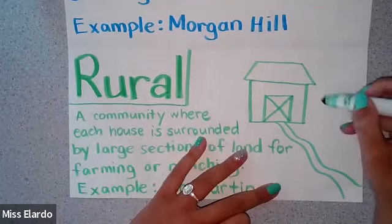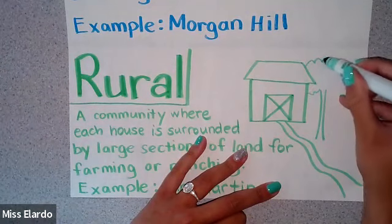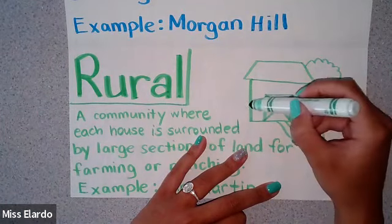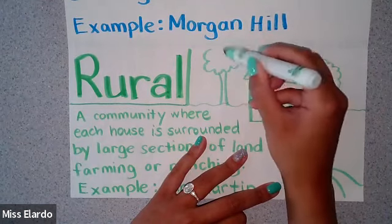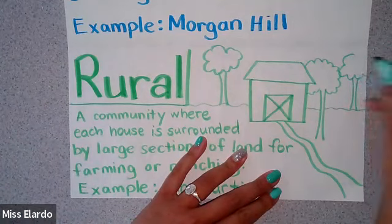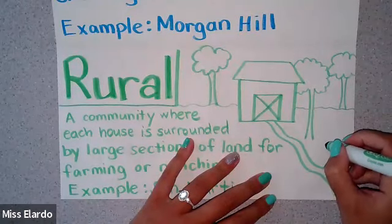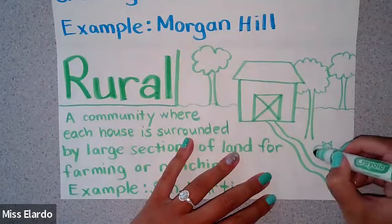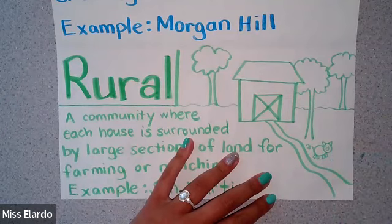I'm going to draw some trees — this tree is going behind the barn. I'm going to add animals. I want one more tree right here in the background. Now I'm going to draw a little piggy, because piggies live on farms. There he is — little piggy!